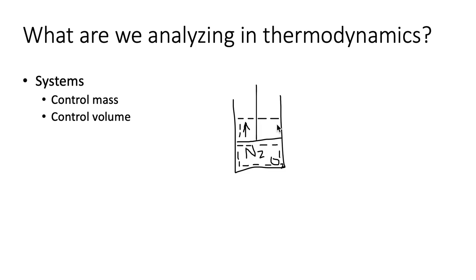Alternatively, we could define the control volume as a specific imaginary box that's unrelated to the physics of the situation — defined as where the piston is now, but even if the piston goes up, the system is still this imaginary box. So the nitrogen and oxygen are going to basically leave the system as the piston goes up. But those are all perfectly valid ways to define the system.